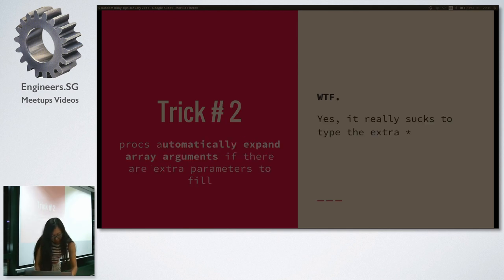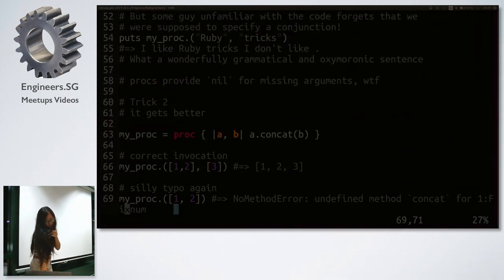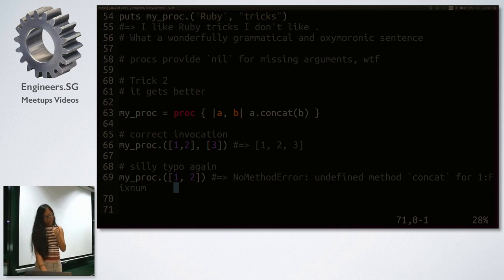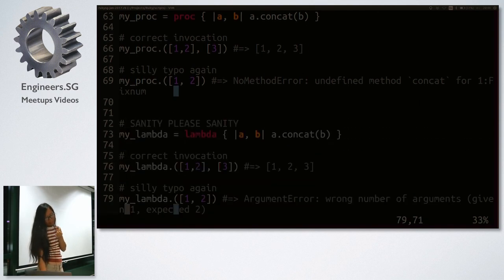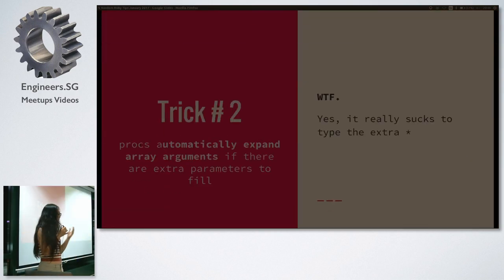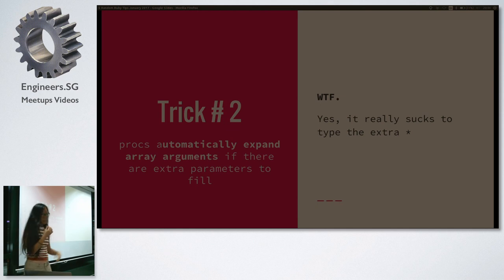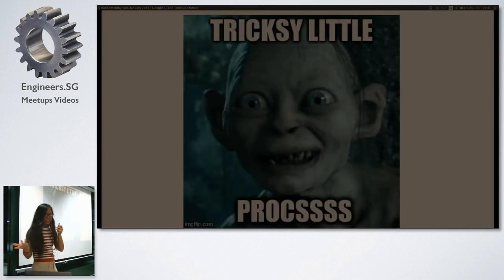Another proc trick: I have a proc that takes a and b as arrays and concatenates them. I forget to pass in the second argument. Now I get a NoMethodError: undefined method concat for Fixnum — because the proc automatically expands array arguments to fill extra parameters. If I really wanted to expand array arguments, I could just explicitly splat my array. I don't understand why this behavior exists.